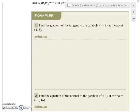Alright, so we have to find the gradient of the tangent to the parabola x squared equals 8y at the point (4, 2). Now it's in the format of x squared equals 4ay. We have to find the derivative of it to find the gradient of the tangent, because it's asking us to find the gradient of the tangent, which is very nice of it.